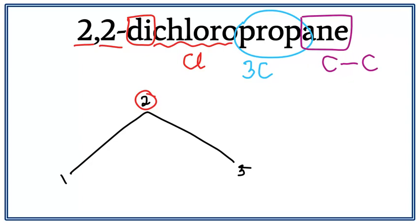So let's get rid of these numbers and let's attach the chlorines on the second carbon. So this is the structure for 2,2-dichloropropane.